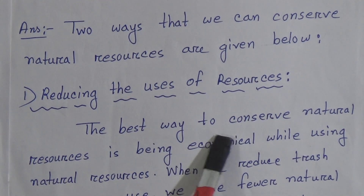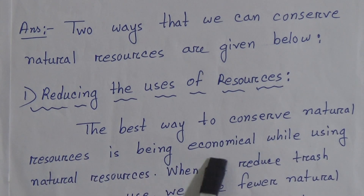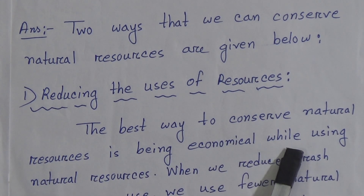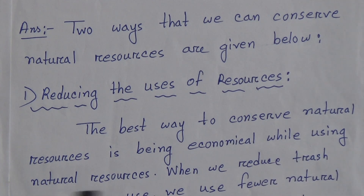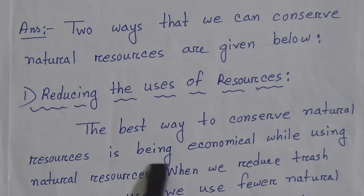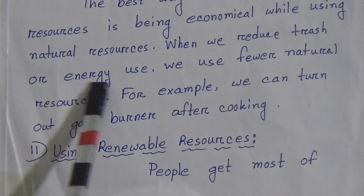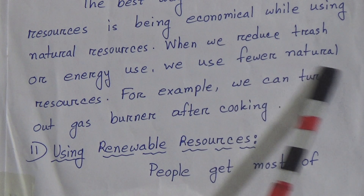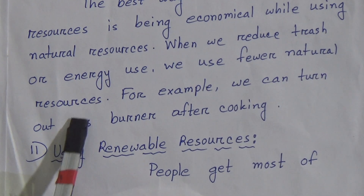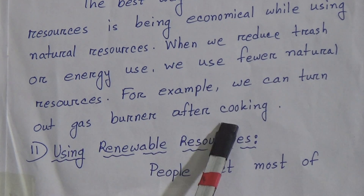The best way to conserve natural resources is being economical while using natural resources. When we reduce trash or energy use, we use fewer natural resources. For example, we can turn off the gas burner after cooking.